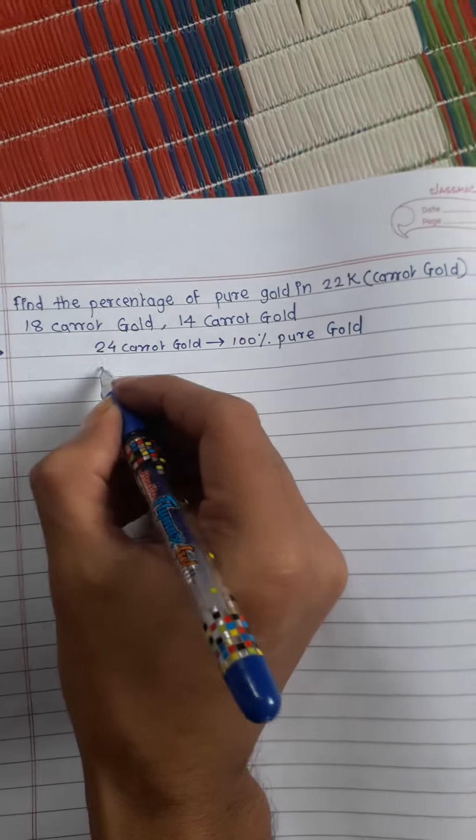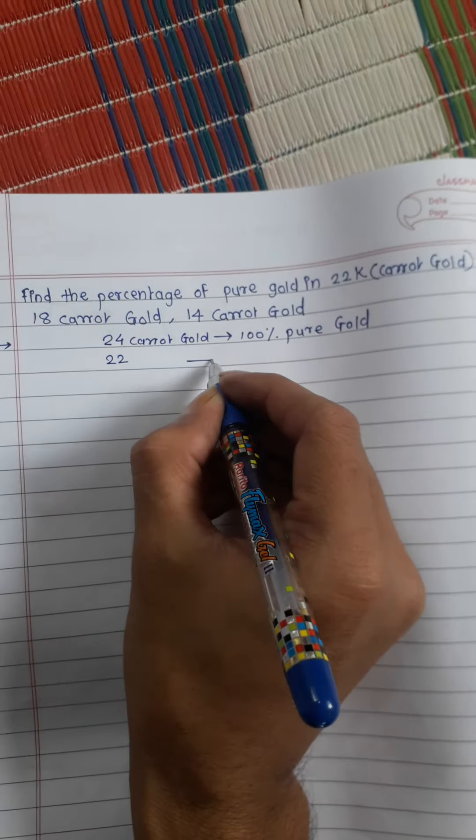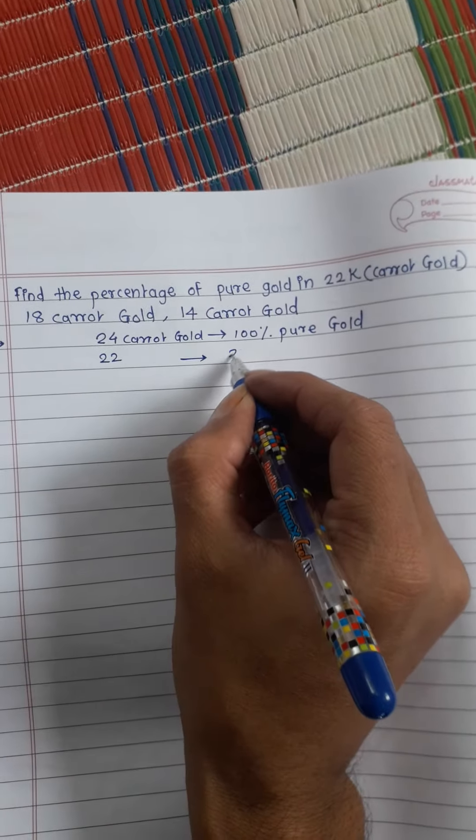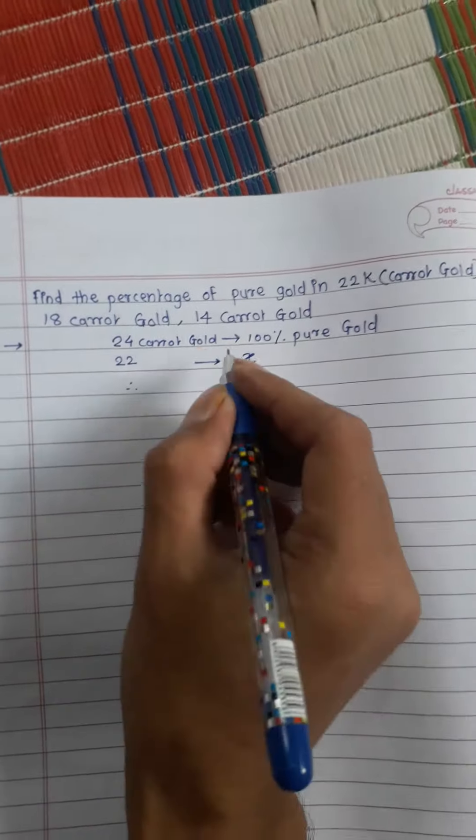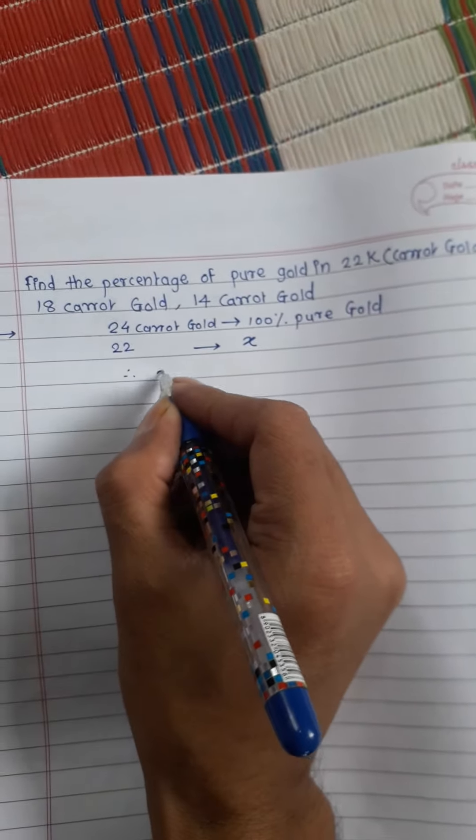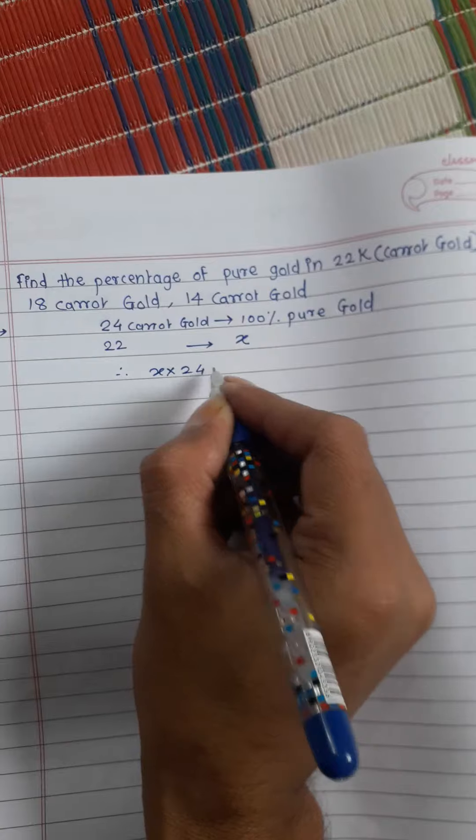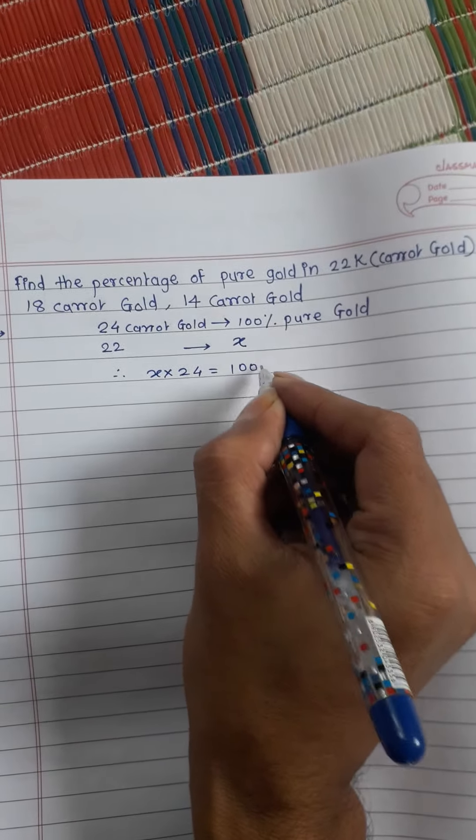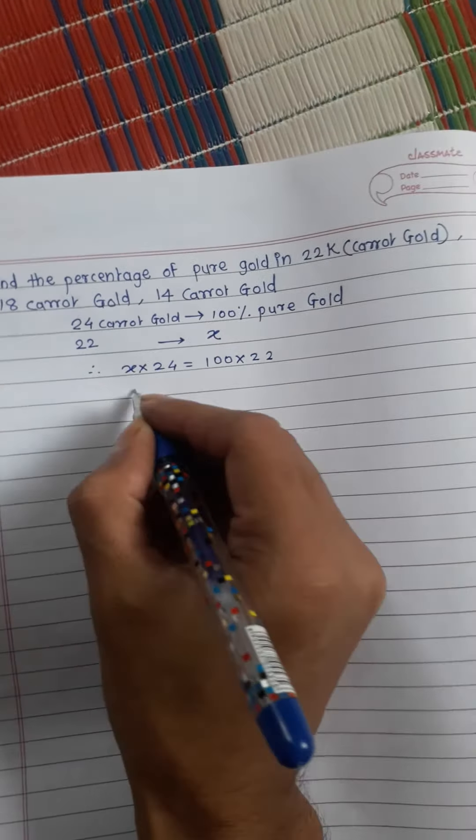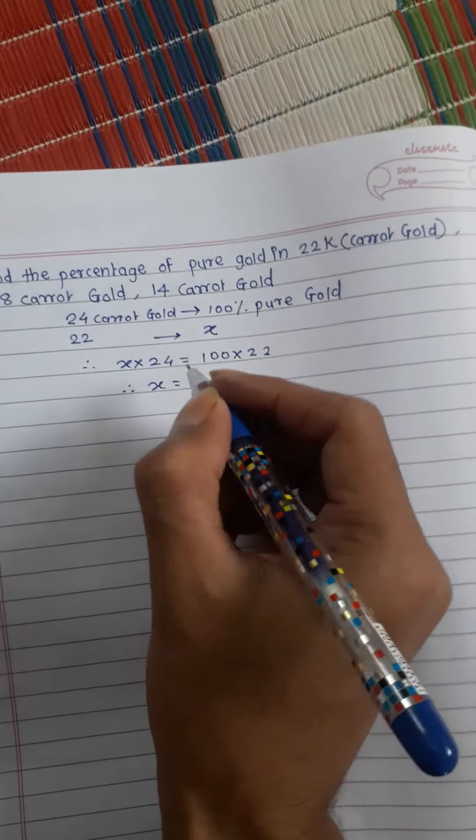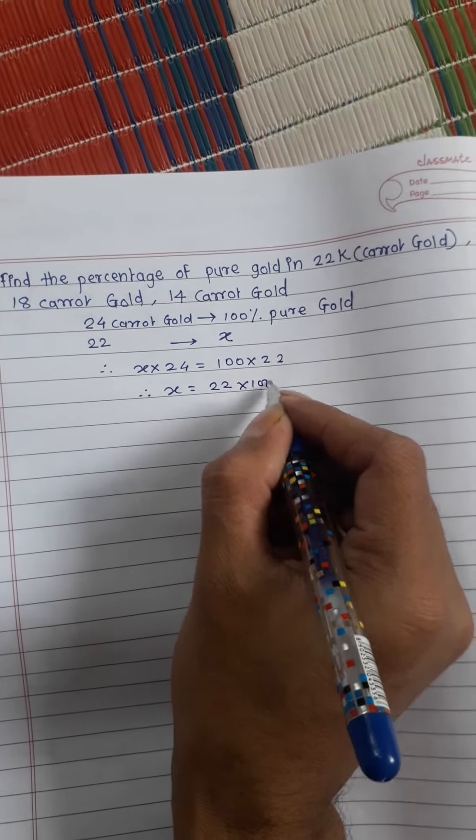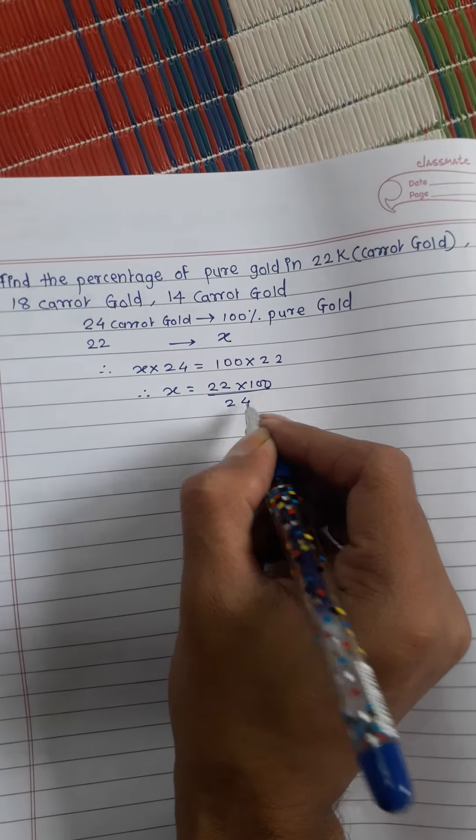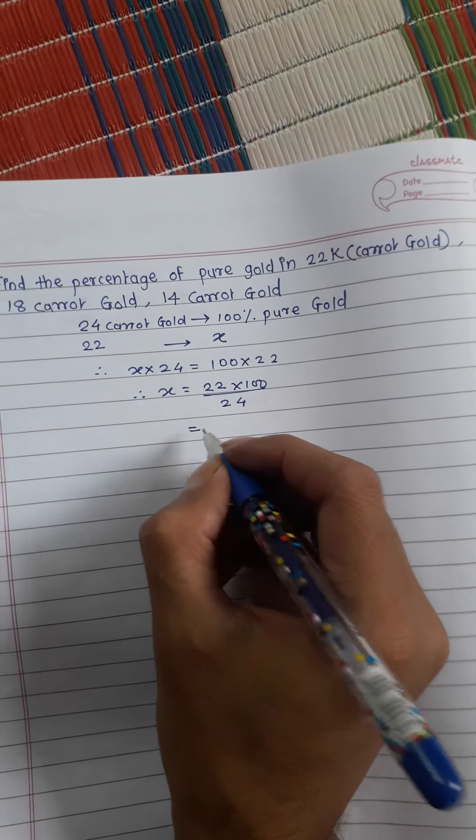So 22 carat, suppose we will take x percent pure gold. Cross multiplication: x multiply by 24 is equal to 100 multiply by 22. Therefore x is equal to 22 into 100 divided by 24.